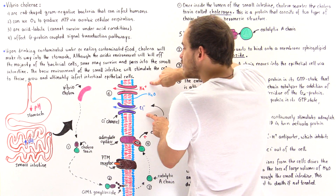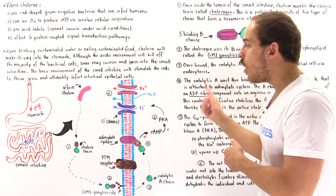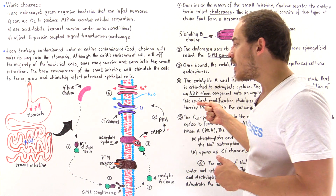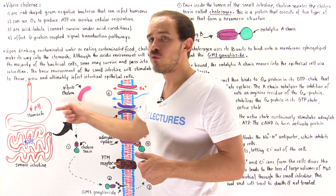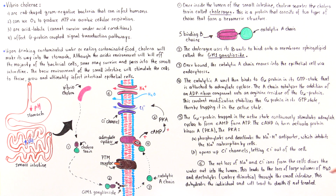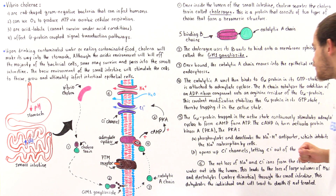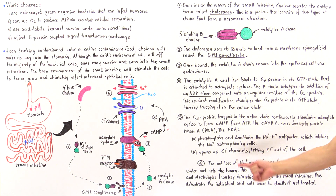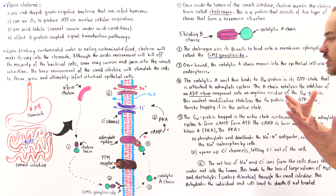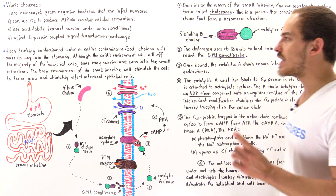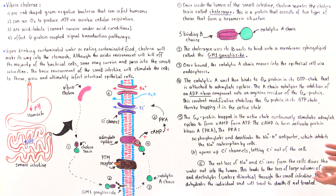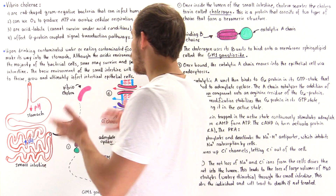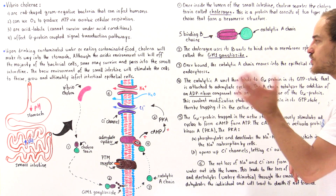As these salt ions move out of the cell, water molecules follow by diffusing across the membrane in the direction of the net salt movement. The net loss of sodium ions and chloride ions drives the movement of water out of the cells and into the lumen of the small intestine, leading to the loss of large volumes of water and electrolytes. This is exactly why patients with cholera experience very watery diarrhea. If the individual isn't treated, they will eventually die as a result of dehydration from the loss of water and electrolytes — sodium and chloride ions.